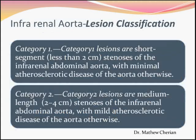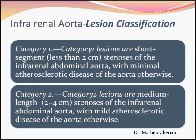Let us classify intra-renal aortic lesions. Category 1 lesions are short segment lesions less than 2 cm of the intra-renal abdominal aorta with close to normal aorta both above and below the lesion. Category 2 lesions are medium length — 2 to 4 cm — lesions of the intra-renal abdominal aorta, again with hardly any disease in the segments above or below.